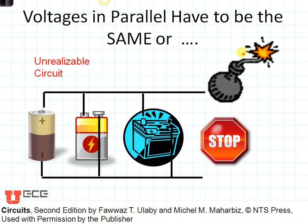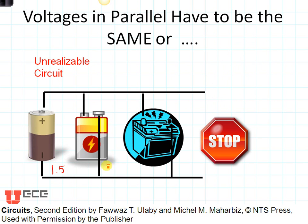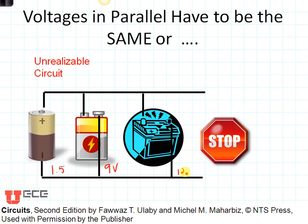Now currents can be added up in parallel, but voltages can't. So voltages in parallel have to be the same or else the circuit blows up. Here, for example, are three different batteries. This is a 1.5 volt battery, this is a 9 volt battery, and this is a 12 volt battery. We can't put those in parallel unless they were equal, or else we would blow up our circuit. So this is also an unrealizable circuit.